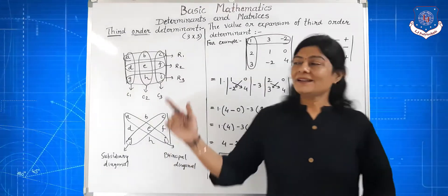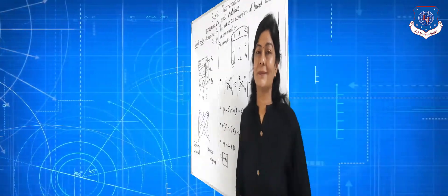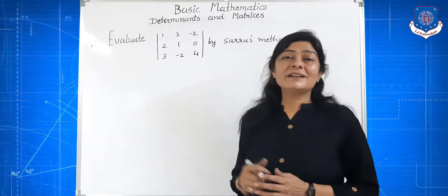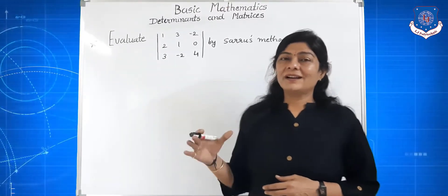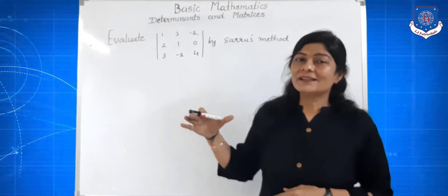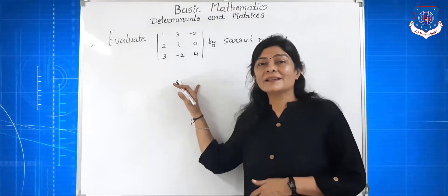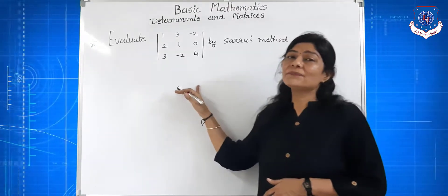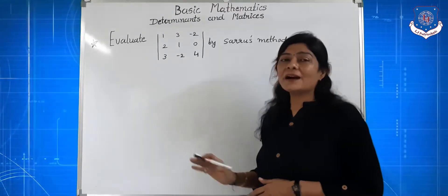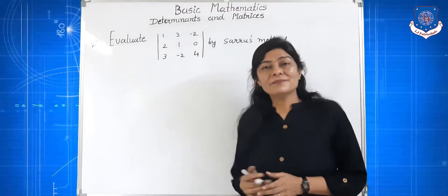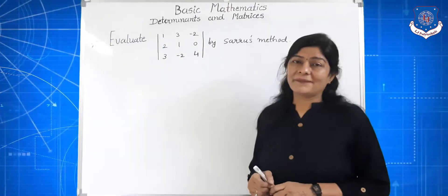Third order determinant ki value minus 6. So determinant has a real value. Abhi hamne third order determinant ki value find ki. Third order determinant ki value find karne ke liye doosra jo method hai, wo hai Sarrus method. Is method se bhi aap third order determinant ki value find kar sakte ho, aur ye bhi bahut easy method hai.